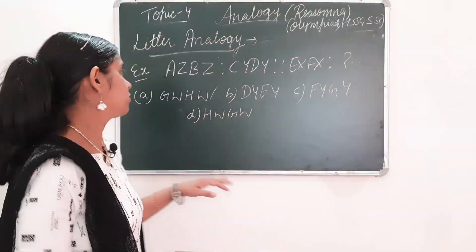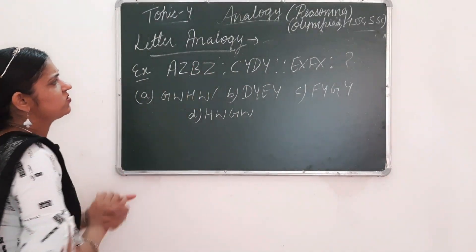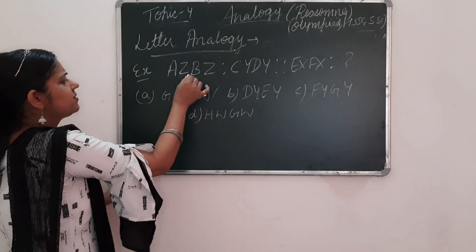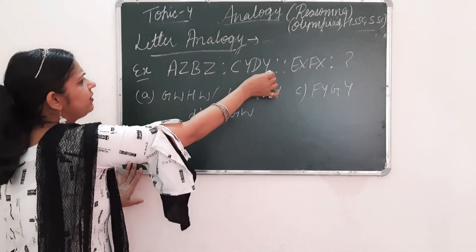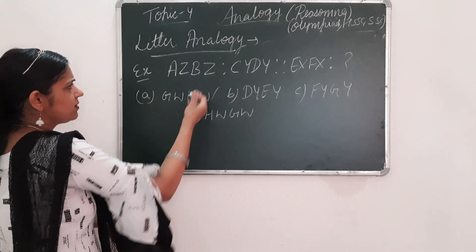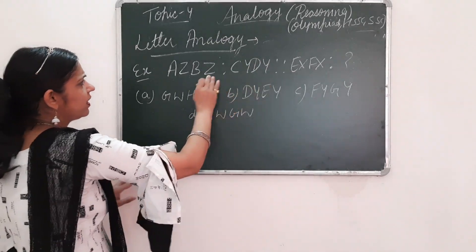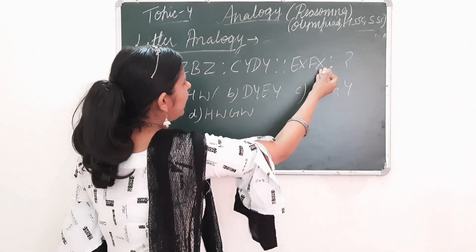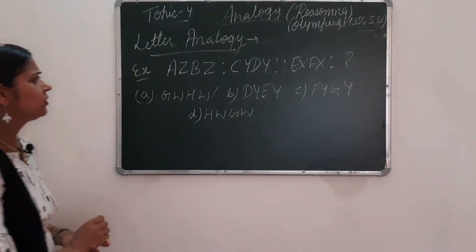What type of question can come in letter analogy? For example: A, Z, B, Y is to C, Y, D, Y — similarly we can write E, X, F, X. What can we write for E, X, F, X?